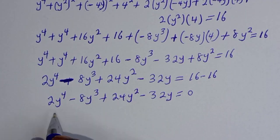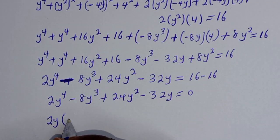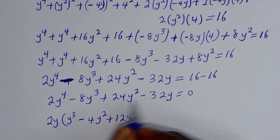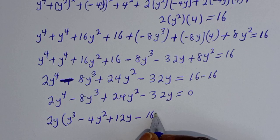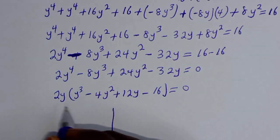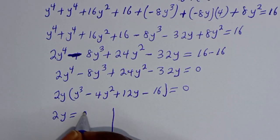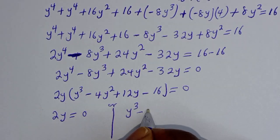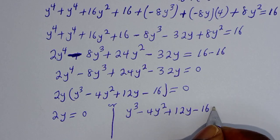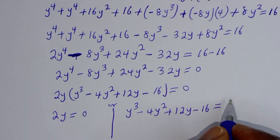From here, 2y is common, so let's factor it out. We have 2y times y cubed minus 4y squared plus 12y minus 16 equals 0. Now there are two cases. The first case is 2y equals 0, or the second case is y cubed minus 4y squared plus 12y minus 16 equals 0.